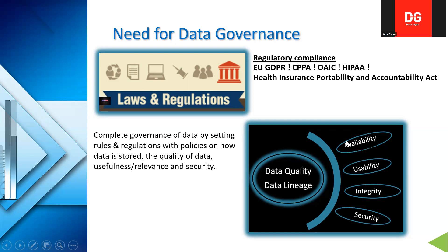These are the different components of data governance. Data needs to be available so that anyone with the right access can access it at any time. Usability means the data should be accurate and quality-checked. Integrity means the data has not been tampered with — it is as expected from the origin.